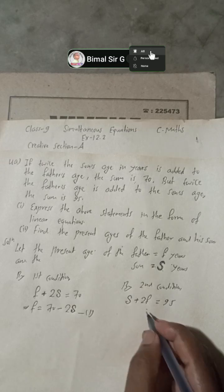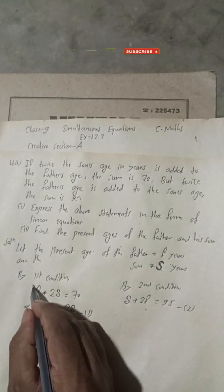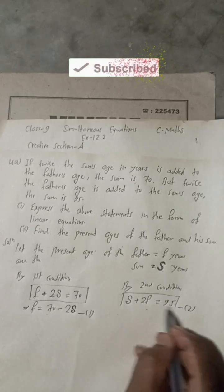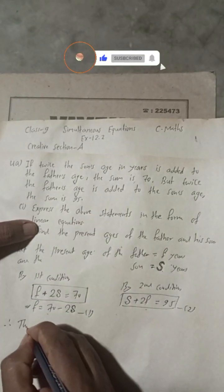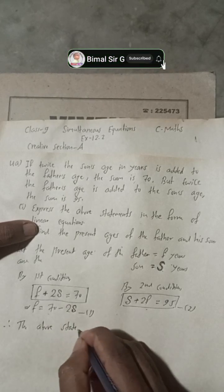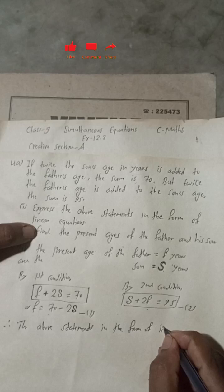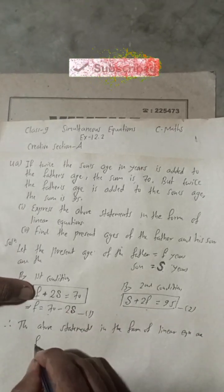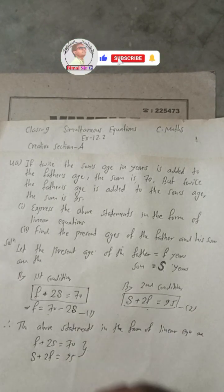So these are our two main equations. The question asks to express the above statements in the form of linear equations. The required linear equations are: F + 2S = 70 (equation 1) and S + 2F = 95 (equation 2).